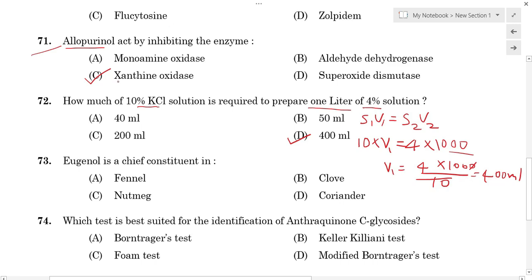Next question: Eugenol is a chief constituent of which plant? Option A: Fennel. Option B: Clove. Option C: Nutmeg. Option D: Coriander.